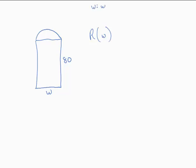So if W is the width, then R of W is the area of the rectangle, and the area of the rectangle is 80W.